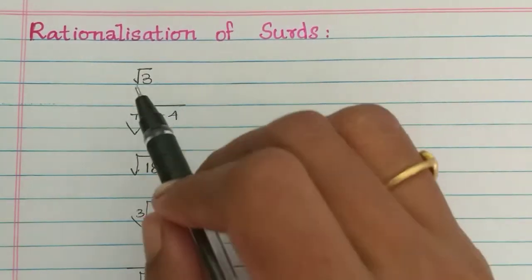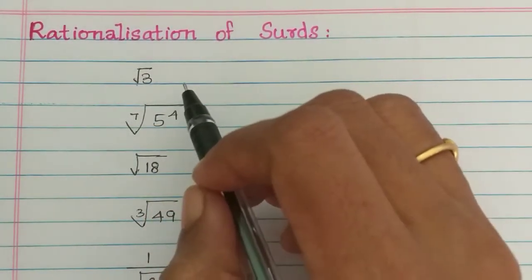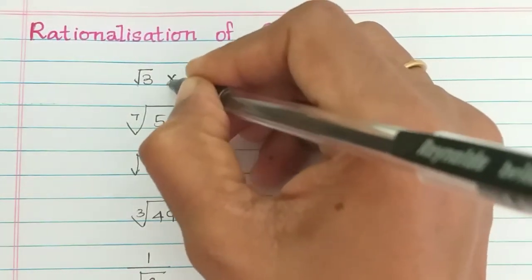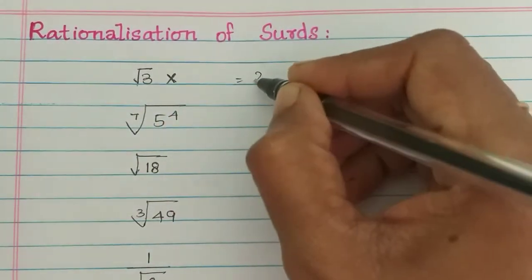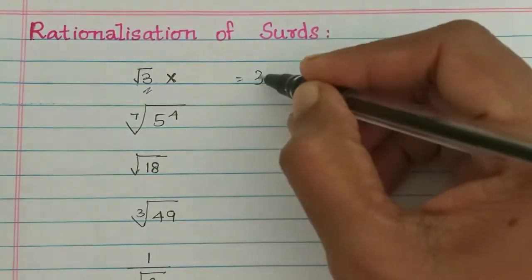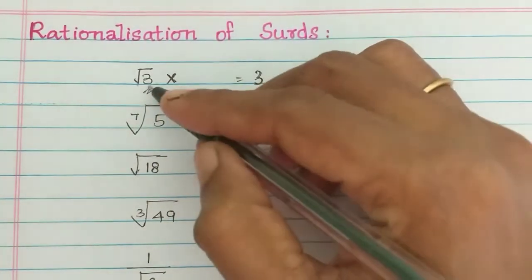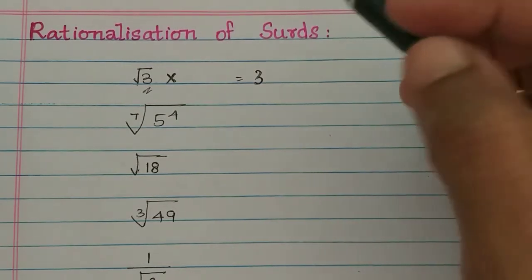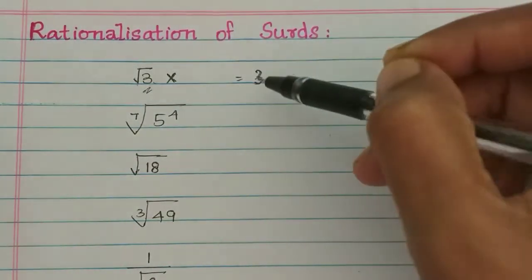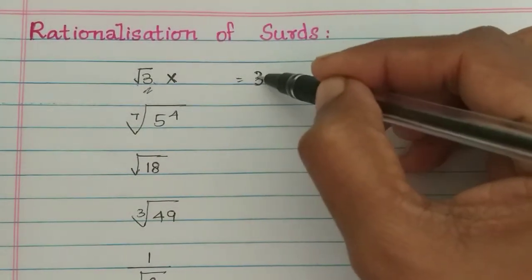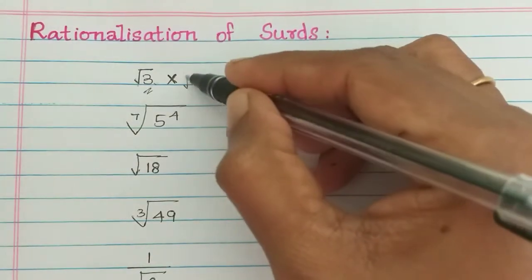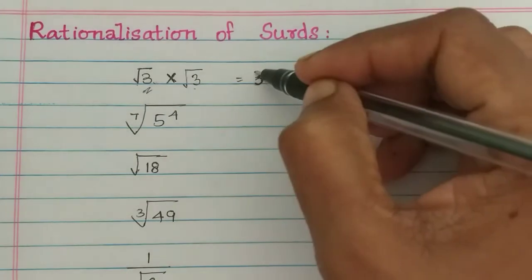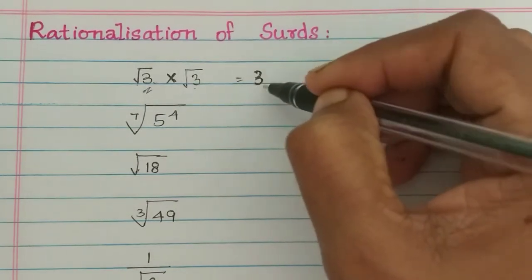One over root 3 — how do we rationalize this? How do we multiply this? If you multiply root 3 by root 3, the result is 3. So if you multiply by root 3 after the root 3, we can get a rational number.